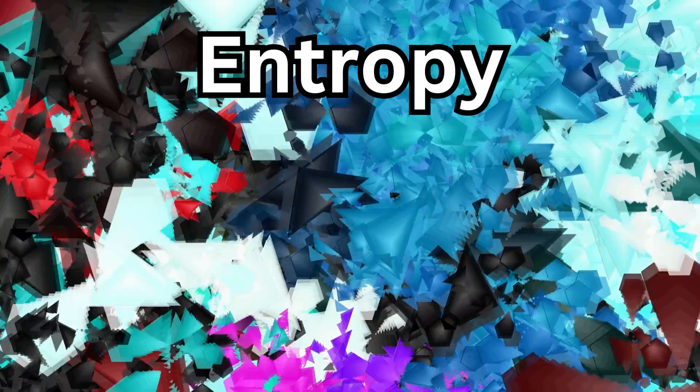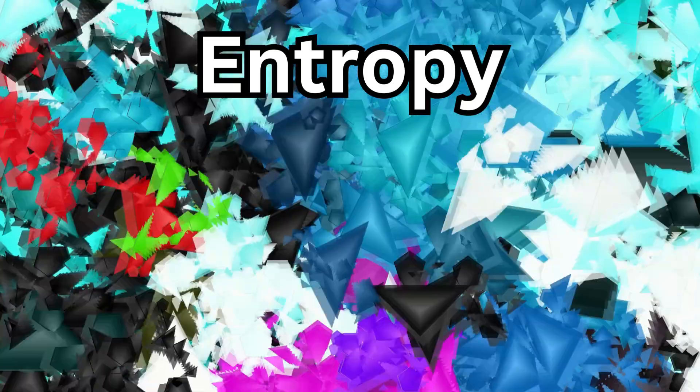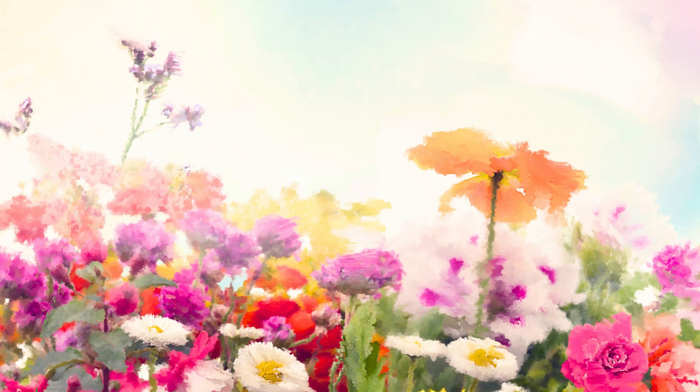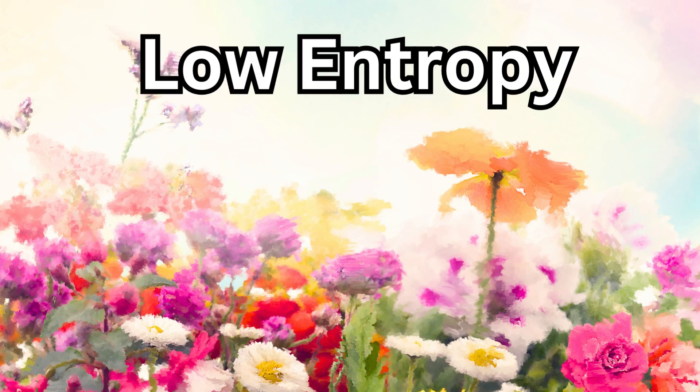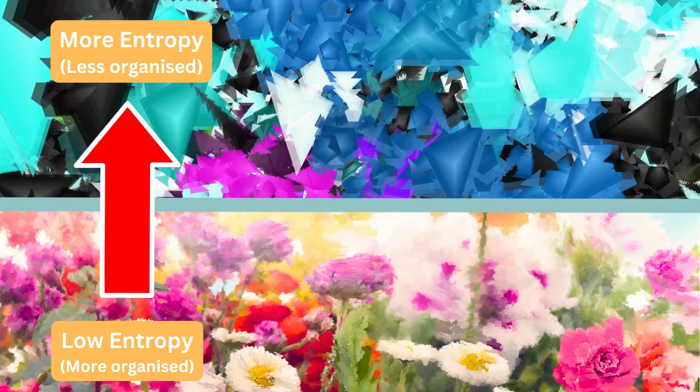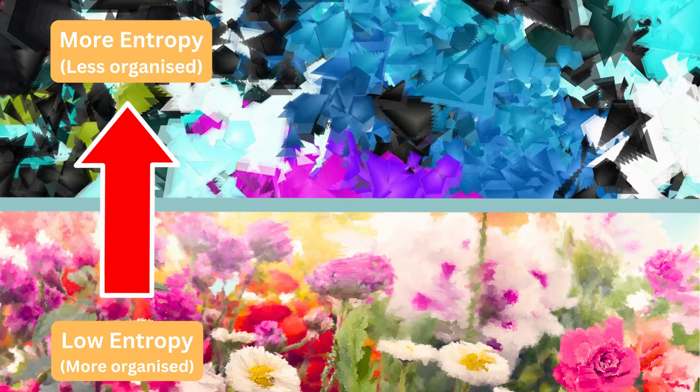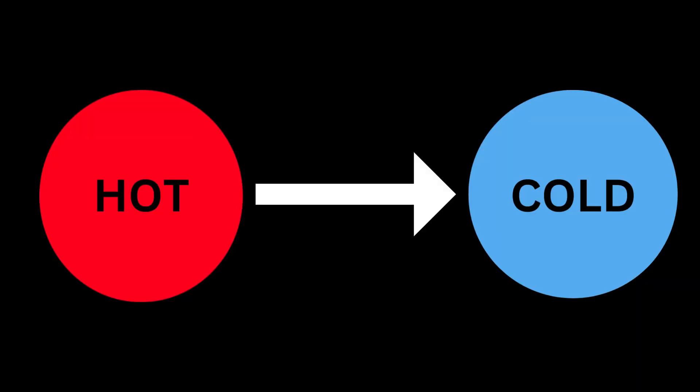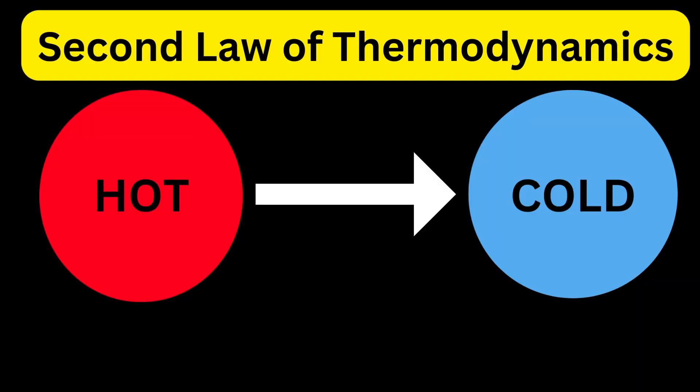Entropy is just a way of measuring how jumbled or mixed up things are in a system. When things are all neat and tidy, entropy is low, but when things get all messy, entropy goes up. So the higher the entropy, the more disorganized things are in a system. Now enter the second law of thermodynamics.